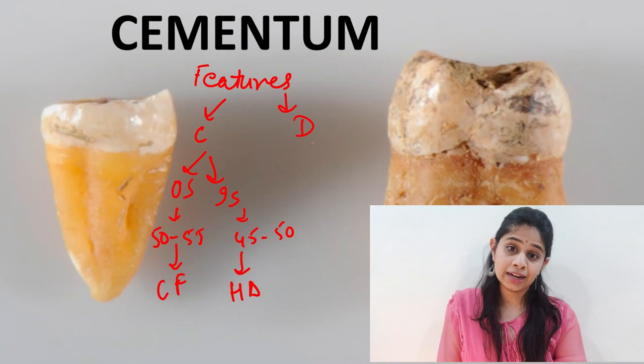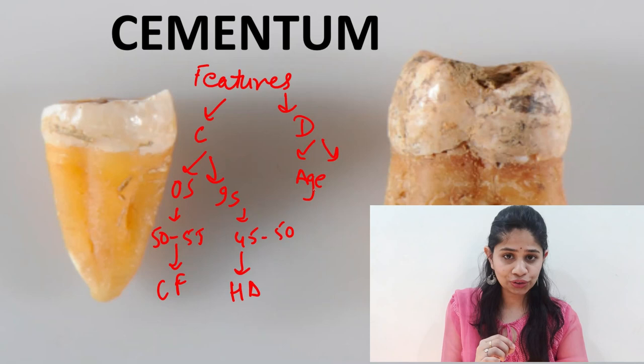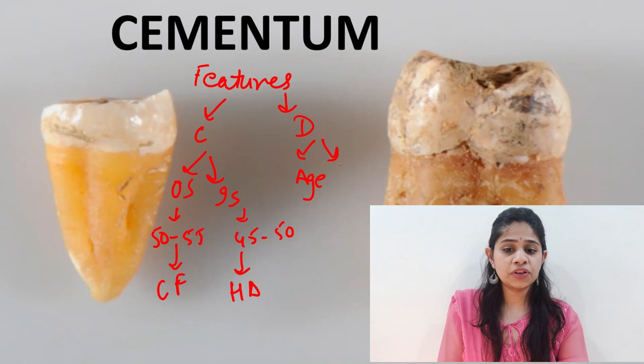So at any given point of time the amount of cementum is quite varied. The second feature of dynamicity comes from the fact that there are different types of cementum in different areas of the root.